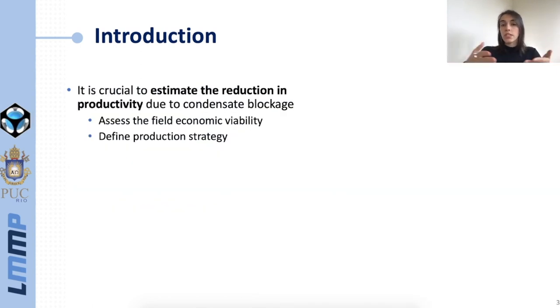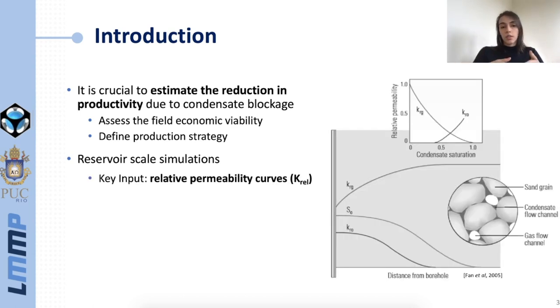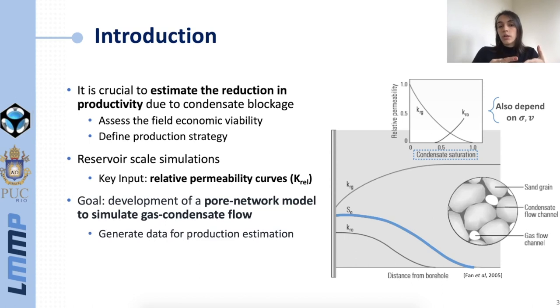When you have this kind of reservoir it is crucial to estimate this reduction in productivity so that we can assess the field economic viability and define production strategies. Those are normally done with reservoir scale simulations for which the input is the relative permeability curves. For gas condensate systems, those curves not only depend on the saturations as usual but they also depend on the phases interfacial tension and the flowing velocity, which makes them particularly difficult to model. In this context our goal is to develop a pore network model to simulate gas condensate flow and generate this kind of data for production estimation.